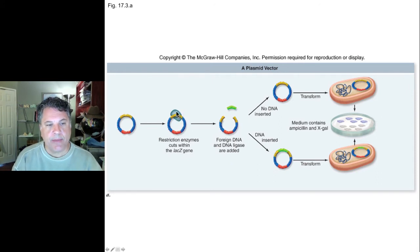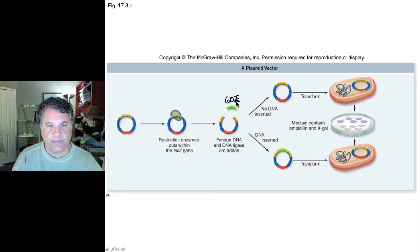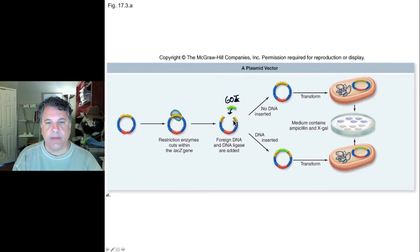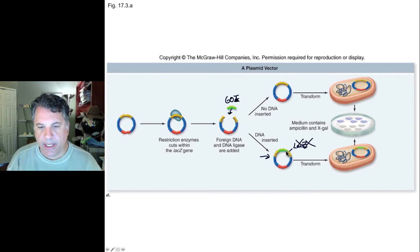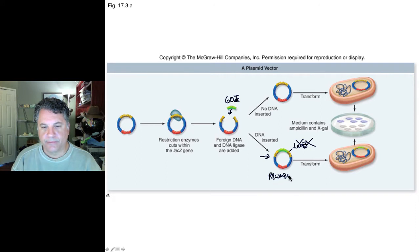If we cut with a restriction enzyme that cuts the LACZ gene in the middle, and also cut foreign DNA — a gene of interest — with the same restriction enzyme, it can be inserted via annealing with its sticky ends to each end of the cut plasmid, and then sealed with DNA ligase. Because the gene of interest has been inserted in the middle of the LACZ gene, LACZ is no longer functional — we've knocked it out. This gives us a recombinant plasmid containing our gene of interest.